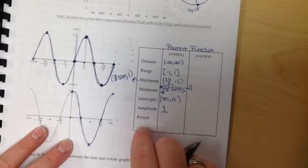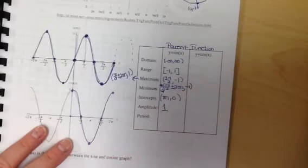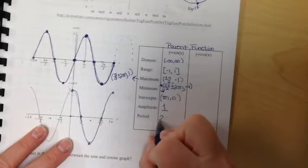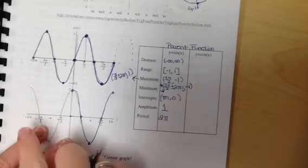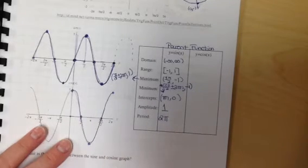Period is how long it takes the graph to repeat itself. We talked the other day about how the period of sine and cosine are both 2π, because it takes 2π all the way around the circle to get back where we started again.